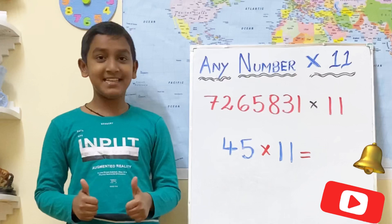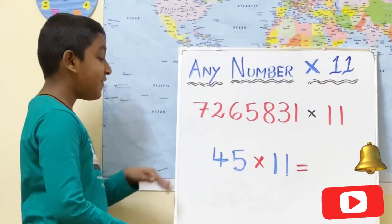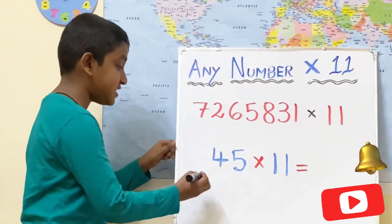Let's do the basic. First, we will multiply 45 by 11. Here, first digit of the question is the first digit of the answer.